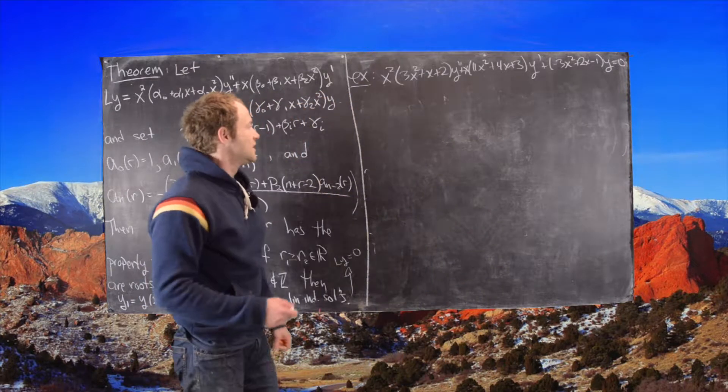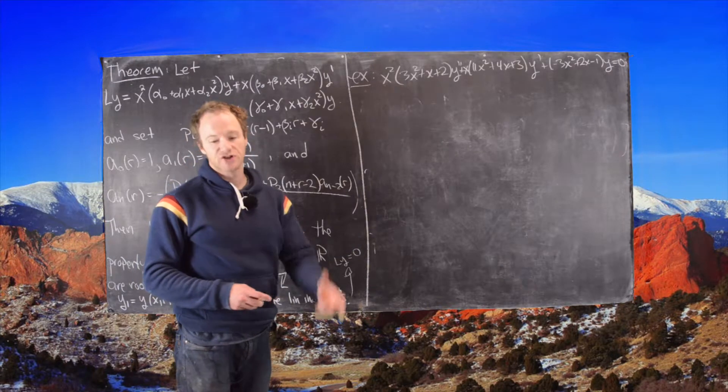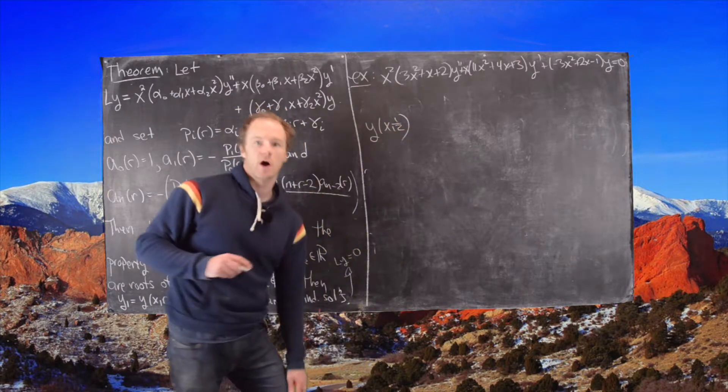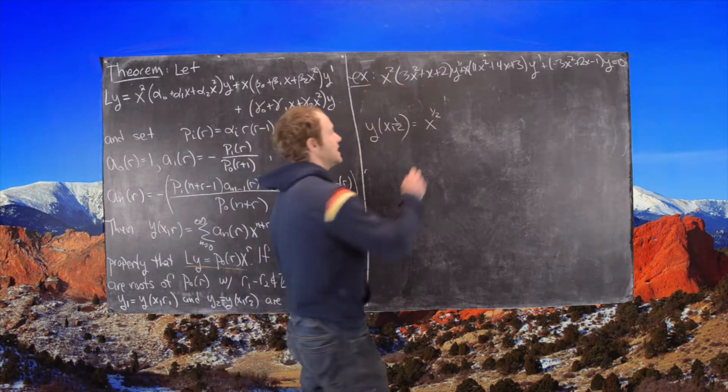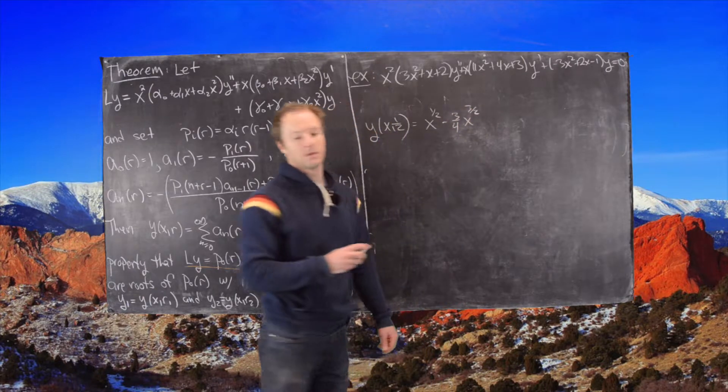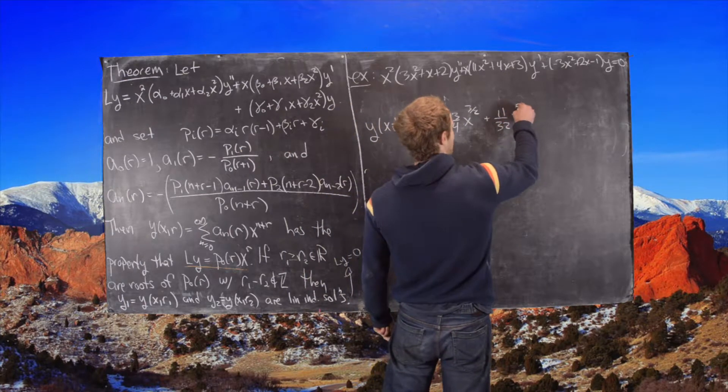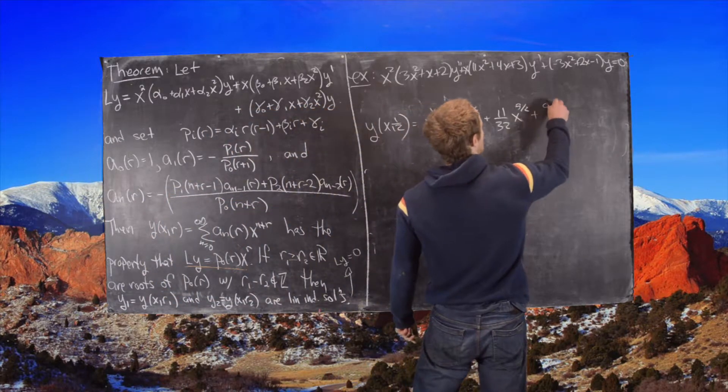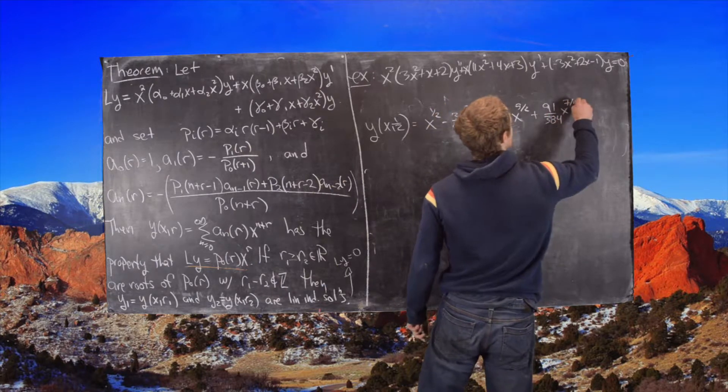So now plugging in values for n and r, we get the following two solutions. And I'll just write the first several terms of each. So we have y(x, 1/2). So this is the one where r equals half. So this is going to be equal to x to the half. And then the next term is minus 3 quarters x to the 3 halves. And then the next one is plus 11 over 32 x to the 5 halves. And then the next one is plus 91 over 384 x to the 7 halves.